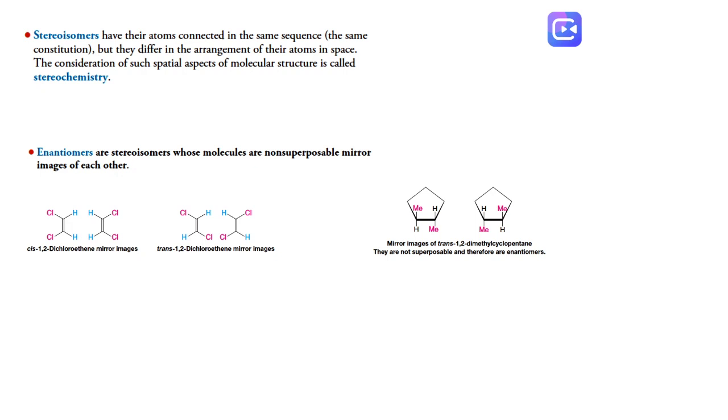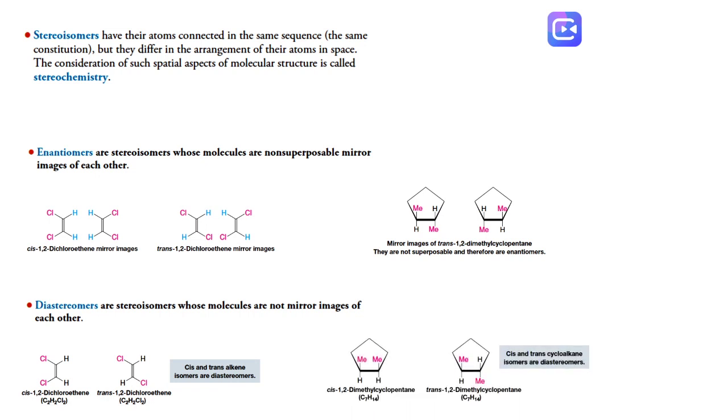The other examples are diastereomers, and they don't have mirror images. You can see if you close like closing the book, they are not matching like the enantiomers. Also the other compounds, the cyclic ones. This is the explanation about the difference between enantiomers and diastereomers.